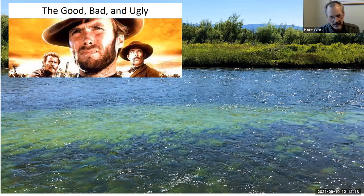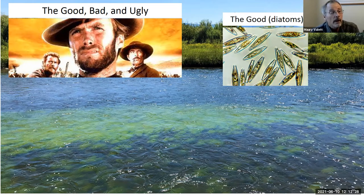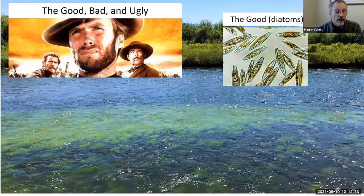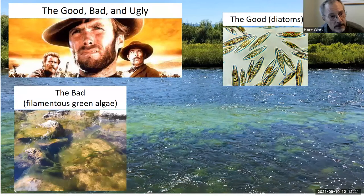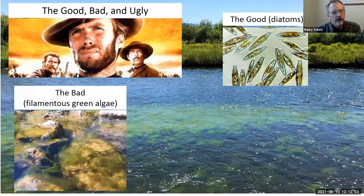The good algae are the diatoms — they are nutritious, have starch storage capacity, are readily grazed by organisms, and promote productivity in river systems that eventually builds fish. The bad are the green algae, because they have the potential to bloom largely, usually when nutrients are abundant, creating the types of blooms we often see in the Clark Fork.